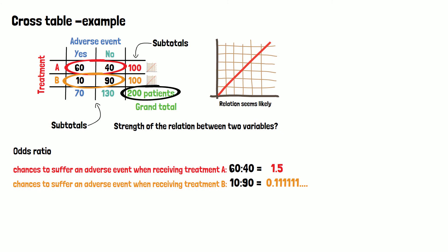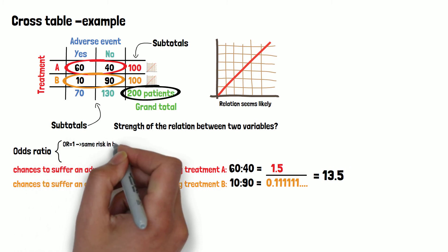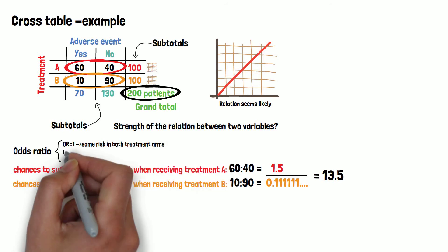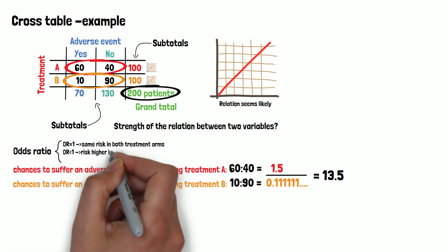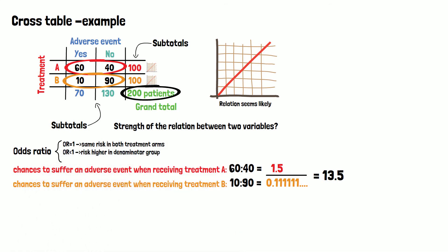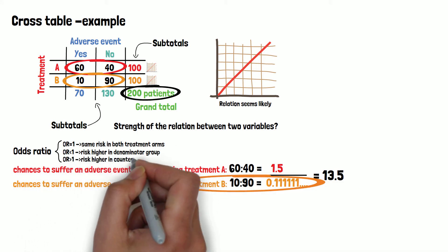The odds ratio is then the ratio between these two proportions. It can be used to quantify the strength of the relation between the two variables. If the odds ratio is equal to 1, the risk is the same in both treatment arms. In case the odds ratio is smaller than 1, the risk is higher in the denominator group. And if larger than 1, the risk is higher in the counter group.